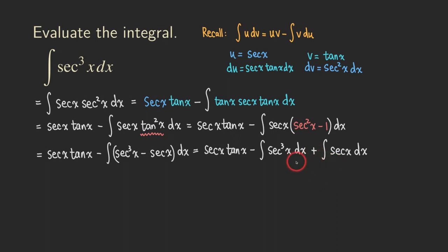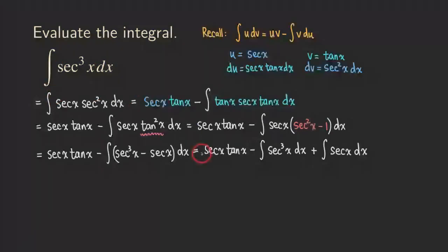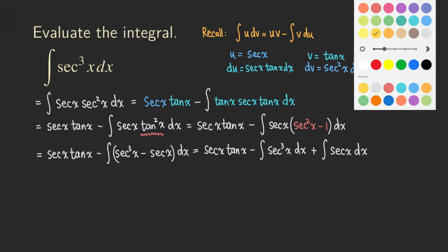So now we need to ask ourselves, what's going on here? Do you realize that we can actually solve this if you know how to integrate secant x? If you don't remember how to integrate secant x, there's a video in the description that will show you how. But here I'm not going to show how to integrate secant x. What about the secant cube? This is actually the same integral that we had originally.